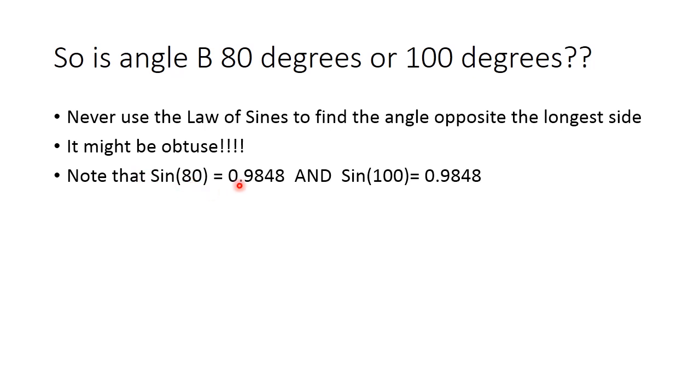Well, take a look at this. The sine of 80 degrees is approximately 0.9848. The sine of 100 degrees is also approximately 0.9848. That's interesting. As it turns out, all supplementary angles have the same sine. Which means that sine can't tell the difference between an acute angle and an obtuse angle.